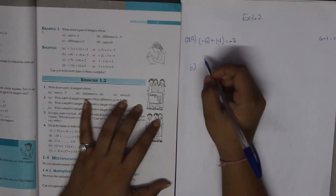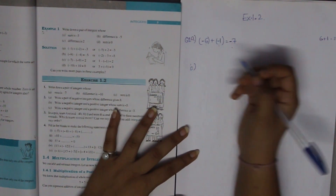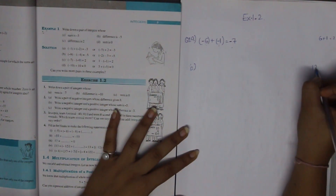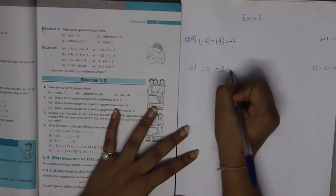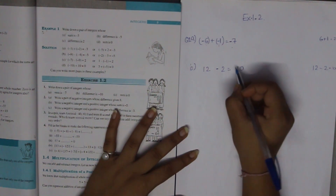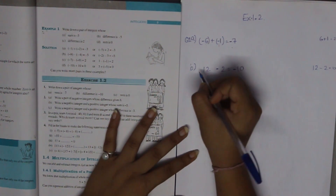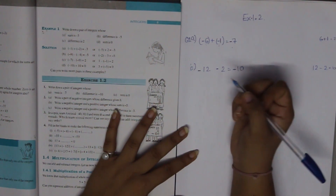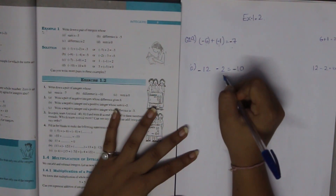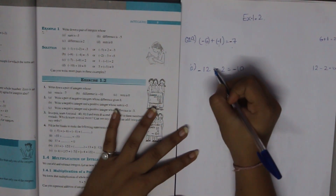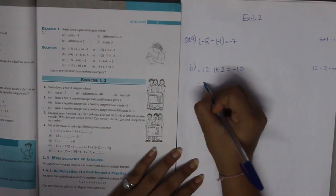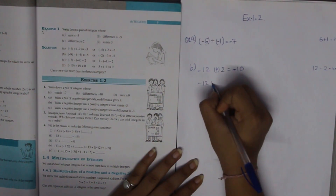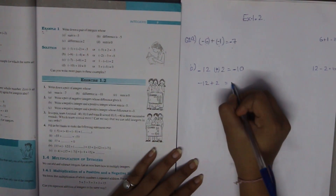Part B: The difference is minus 10. We need two numbers whose difference is 10. Like 12 minus 2 equals 10. But we need negative 10. If we subtract minus 12 and minus 2 we get minus 14, so we need to adjust. Minus 12 plus 2 is equal to minus 10.